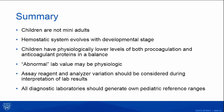In summary: children are not mini-adults. The hemostatic system evolves with developmental stages. Children have physiologically lower pro-coagulant and anti-coagulant factors; however, they are in balance. An out-of-range value may not be essentially abnormal — it may actually be physiologic and the child might be normal otherwise. Assay reagent and analyzer variation should be considered by clinicians while interpreting lab results, and all diagnostic laboratories should make the effort of generating their own pediatric reference ranges.